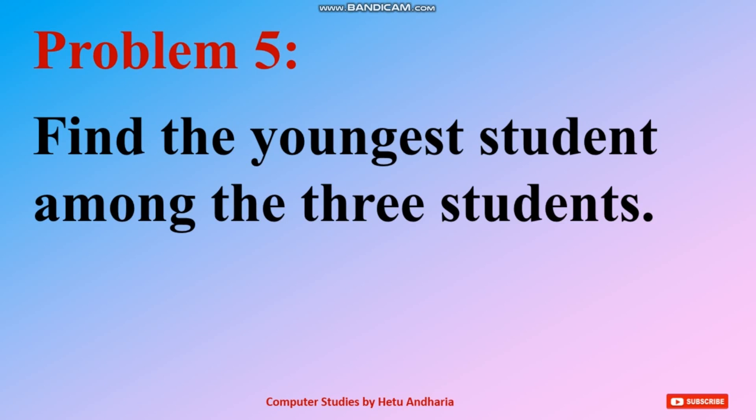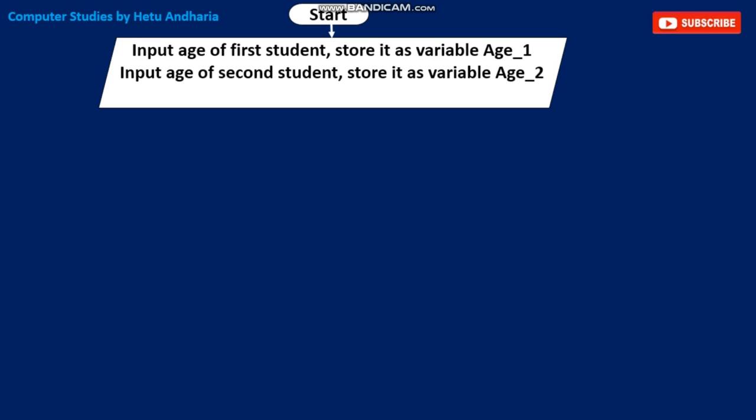Now let's see the possibilities and how to solve the problem. I start straight away with the flowchart. First I draw the terminal shape — Start. The next step: I have to input the age of all 3 students one by one. First, input the age of the first student and store it in variable age1. Then input age of the second student and store it in variable age2, and similarly age3. So in total we have age1, age2, and age3 inputted and stored.